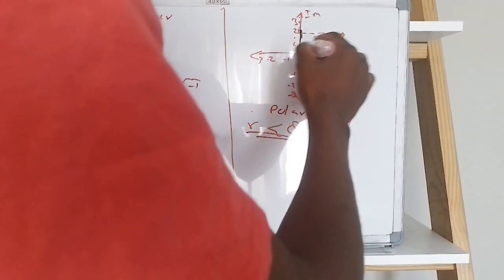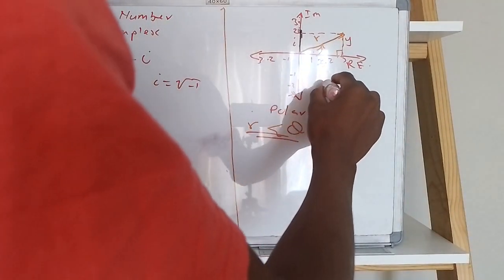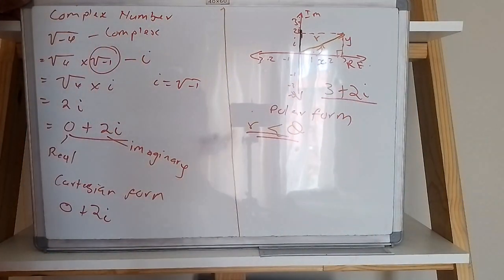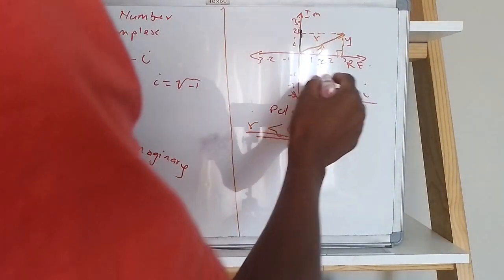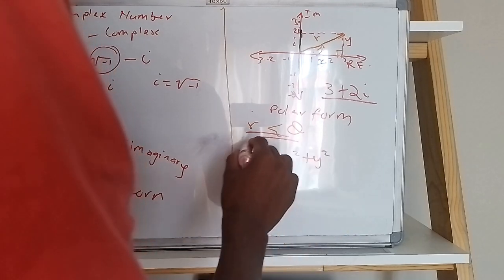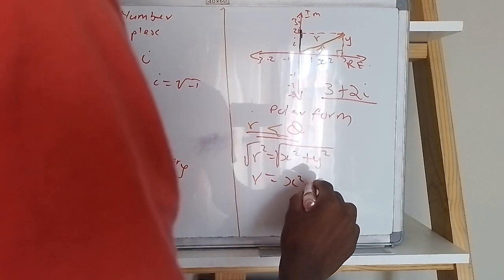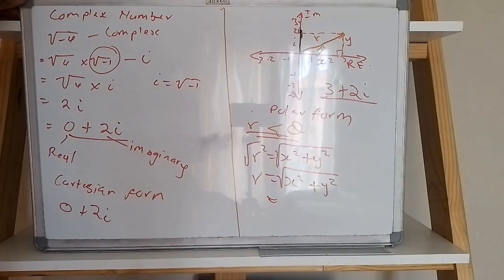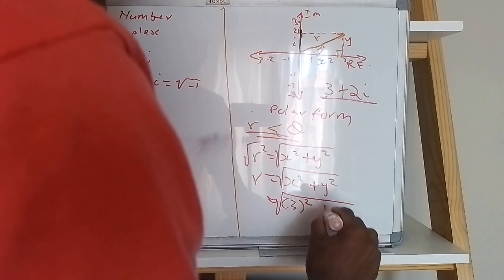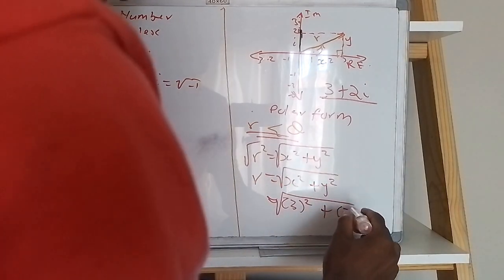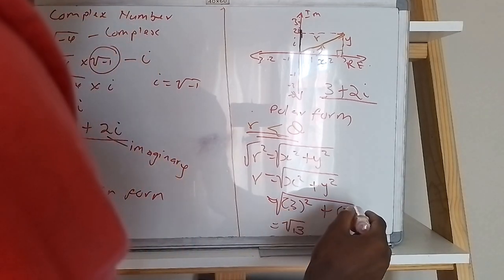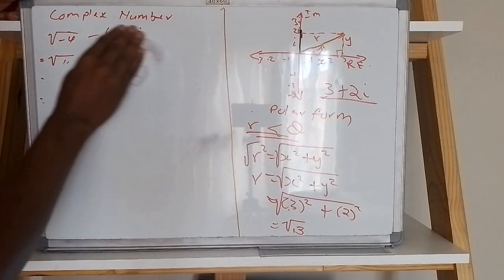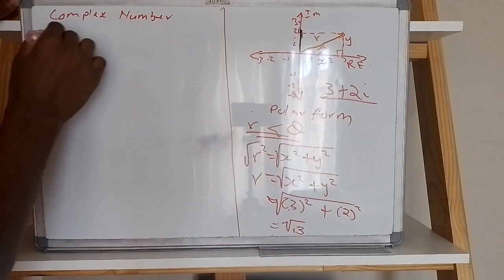Using the complex number three plus two i, I need to represent this in polar form. I know that r squared equals x squared plus y squared, so r equals the square root of x squared plus y squared. Here x represents the real part which is three, and y represents the imaginary part which is two. So r equals the square root of three squared plus two squared, which is the square root of nine plus four, giving me the square root of thirteen.